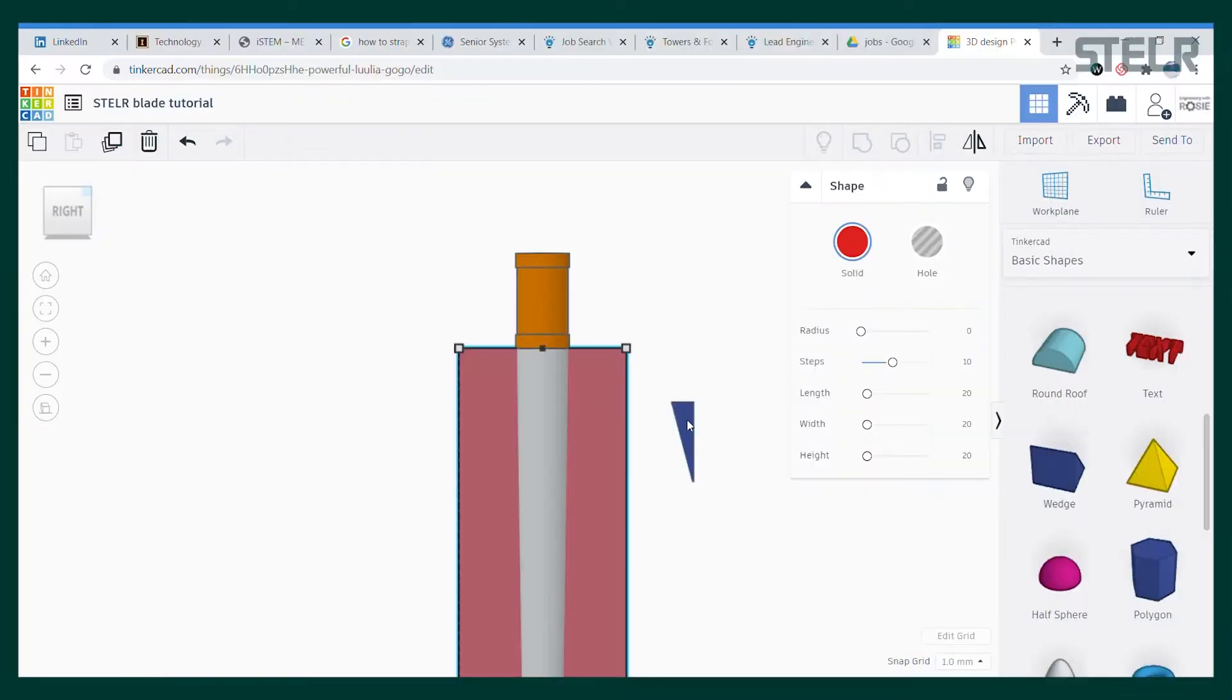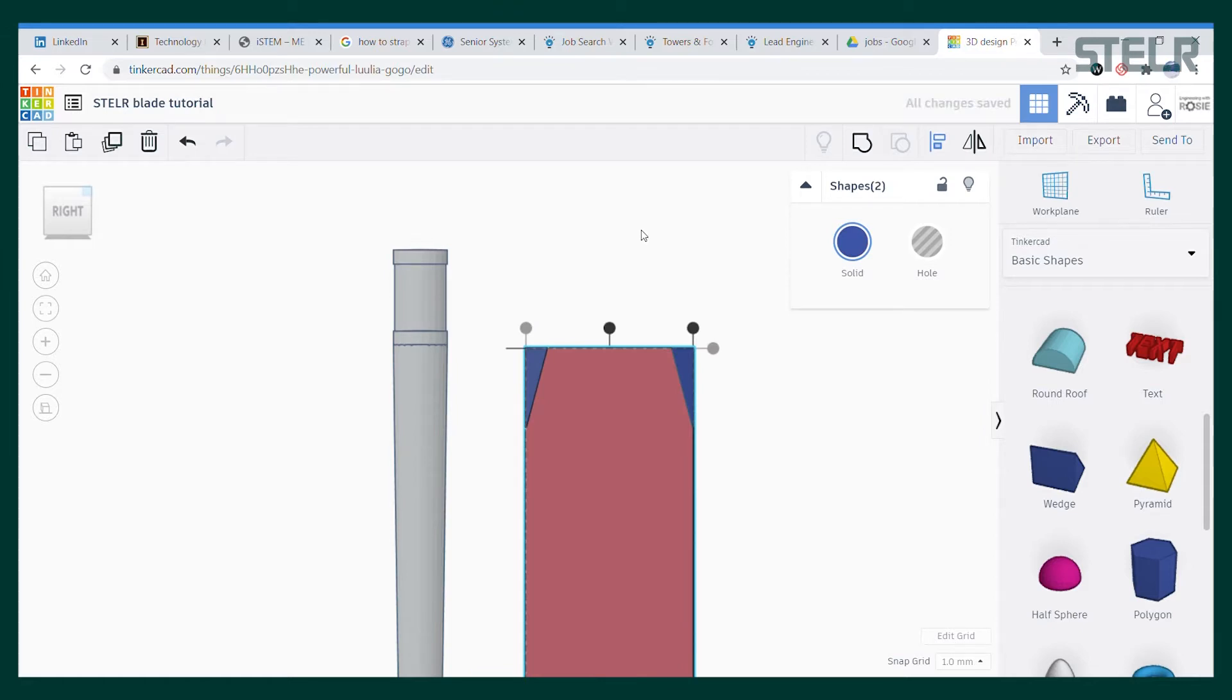Hi, my name is Rosie Varnes and I'm a wind energy engineer. Today I'm going to show you how to use CAD, that's computer-aided design, to design a wind turbine blade that you can 3D print and use with the Stellar wind energy kit to do experiments with.